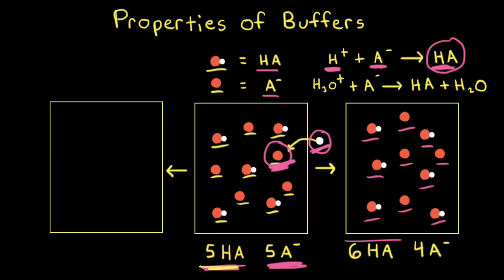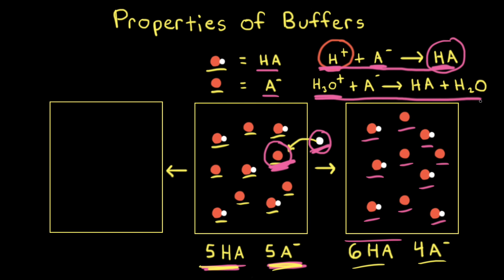So we started with five HA's and five A-minuses. Upon the addition of a small amount of acid, the acid was neutralized by the base that was present, and we formed six HA's and four A-minuses. A buffer solution resists changes in pH — the added H+ was neutralized by the presence of the base. If the buffer solution had not been present and we just had water and added some H+, the pH would have changed dramatically. One way to write the acid-base neutralization reaction is: H+ + A- → HA. Since H3O+ and H+ are used interchangeably, we could also write the net ionic equation as H3O+ + A- → HA + H2O.